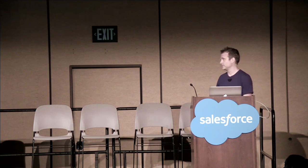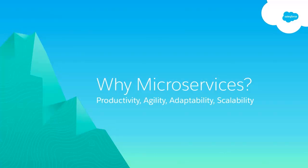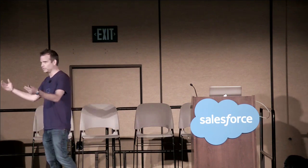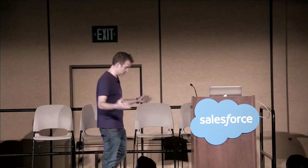So why microservices? The promises are productivity, agility, adaptability, and scalability. With a monolith — one big code base, one service, one deployment — that's simple. That's great when you have one team working on it. Two teams, okay. But as you grow, there's a lot of contention on that monolith and getting things done gets harder and harder.